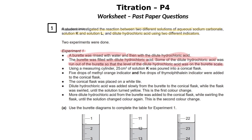Some of the hydrochloric acid was run out of the burette so that the liquid level was on the burette scale. If you think about a burette, readings may start from a certain point but the liquid can be above that. So you open the tap and release the liquid until it reaches the burette scale. Then 25 cm³ of solution K, which is sodium carbonate, was poured into a conical flask, and five drops each of methyl orange and another indicator were added. The conical flask was placed on a white tile to see color changes more clearly.